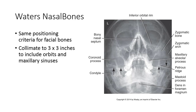For the Waters view of the nasal bones, the part positioning and central ray are identical to that of the Waters view for the facial bones. With the MSP perpendicular to the IR, extend the neck so the OML forms a 37-degree angle with the plane of the IR. This should also place the mentomeatal line perpendicular to the IR and projects the petrous ridges below the maxillary sinuses. The CR should be perpendicular to exit the acanthion, with the collimated field minimized to a 3x3 inch size to include the orbits and maxillary sinuses.